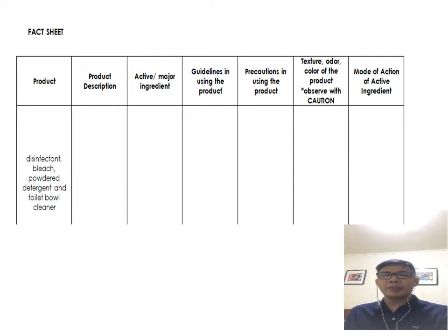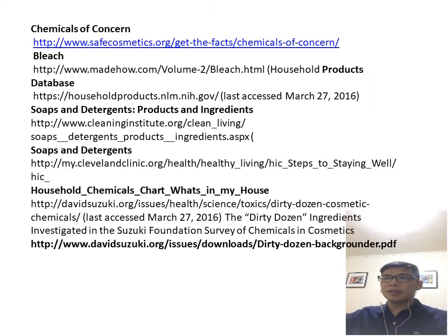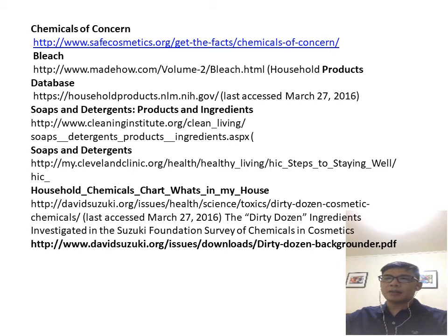You may also look for some information or resources on the internet, which I will be giving you. Here are the internet sources or websites where you can visit: Chemicals of Concern for bleach, Products Database, Soaps and Detergents, Products and Ingredients, Soaps and Detergents, Household Chemicals Chart, What's in My House, and another link. So let's look for some sources.